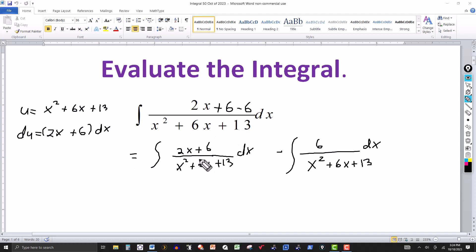Now the first one, we're going to set up. This is equal to the integral of, and then the x squared plus 6x plus 13 in the denominator, that's going to be u. And then the 2x plus 6 dx, this product here in the numerator, is right here. That's your du.